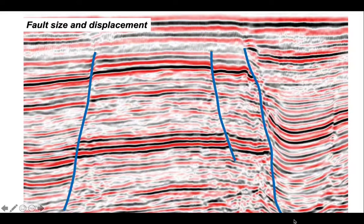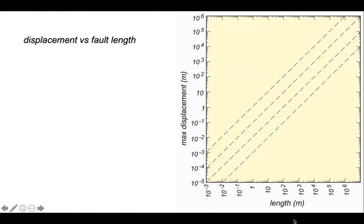So faults come in different sizes and they show different displacements. Let's think how this might work. So what we're going to do now is plot some classical data for fault displacement and fault length to see if there's a relationship. Notice that this is a log-log plot.